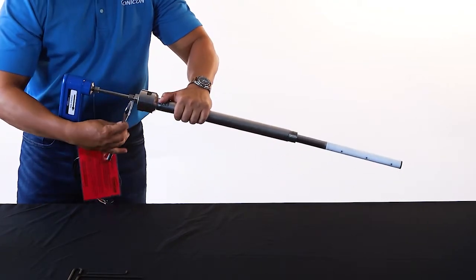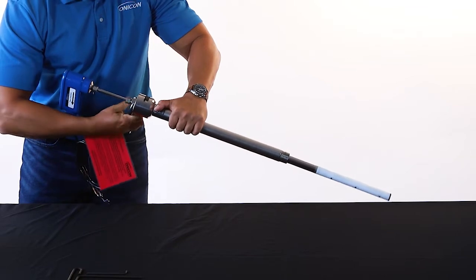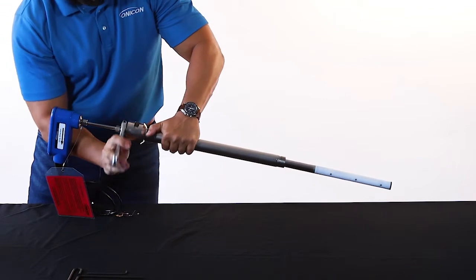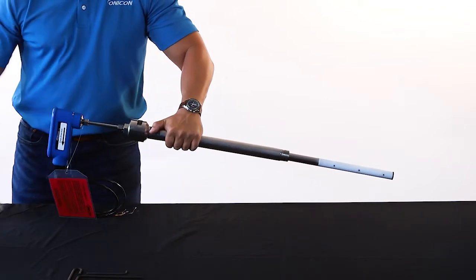Back the preload fitting out of the preload housing by turning the fitting counterclockwise one and a quarter turns. This will set the appropriate preload compression when the meter is installed in the piping system.